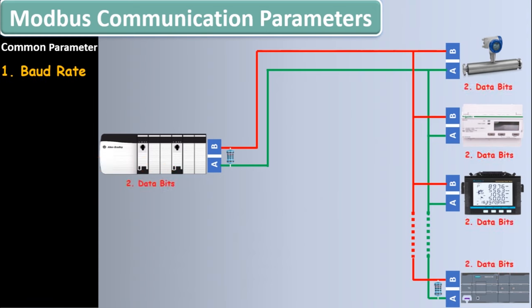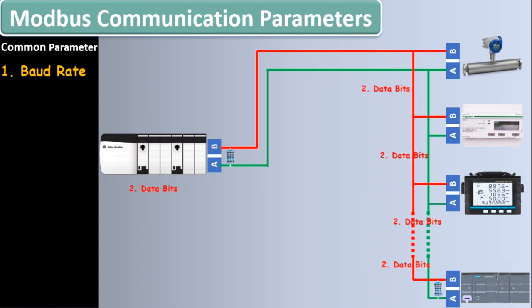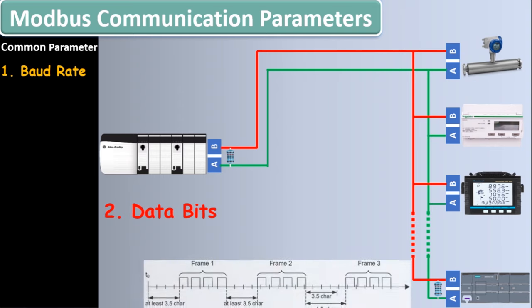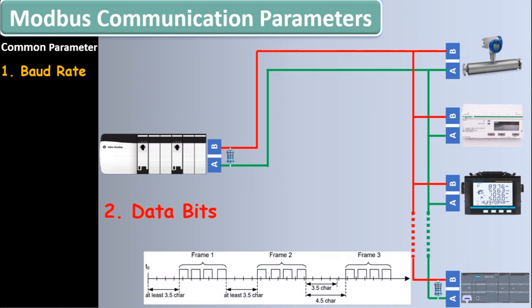The second common parameter in RS485 communication is the number of data bits. All devices in the same RS485 network must have the same number of data bits. Data sent across the Modbus network is in the form of frames. There are two types: 7-bit or 8-bit digital frames. This is handled internally by the RS485 communication port. Normally we use 8 data bits, and the frame shown in the picture is also 8-bit.